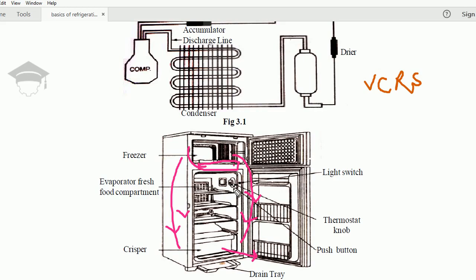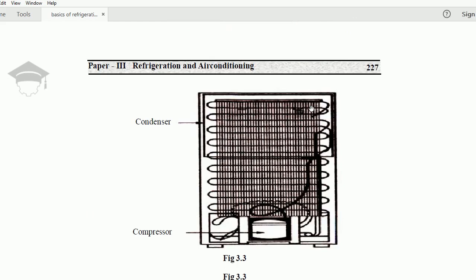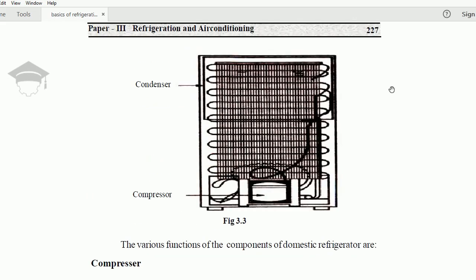The thermostat knob is to set the temperature of the freezer. Now let us understand in detail the working of the components. This is the back side of the freezer where we have the condenser. At the bottom we have the compressor, and somewhere in between we have the capillary tube.